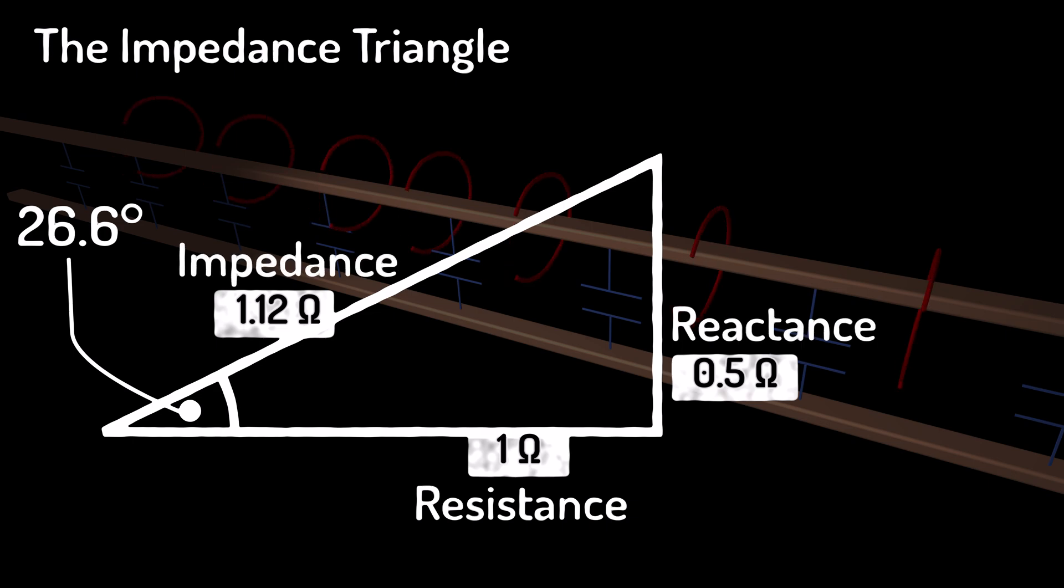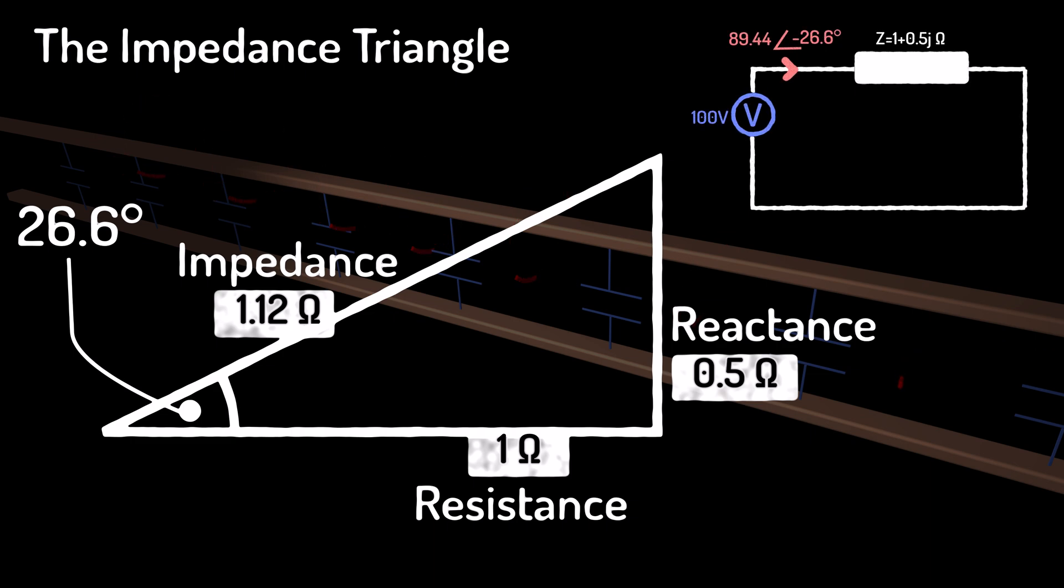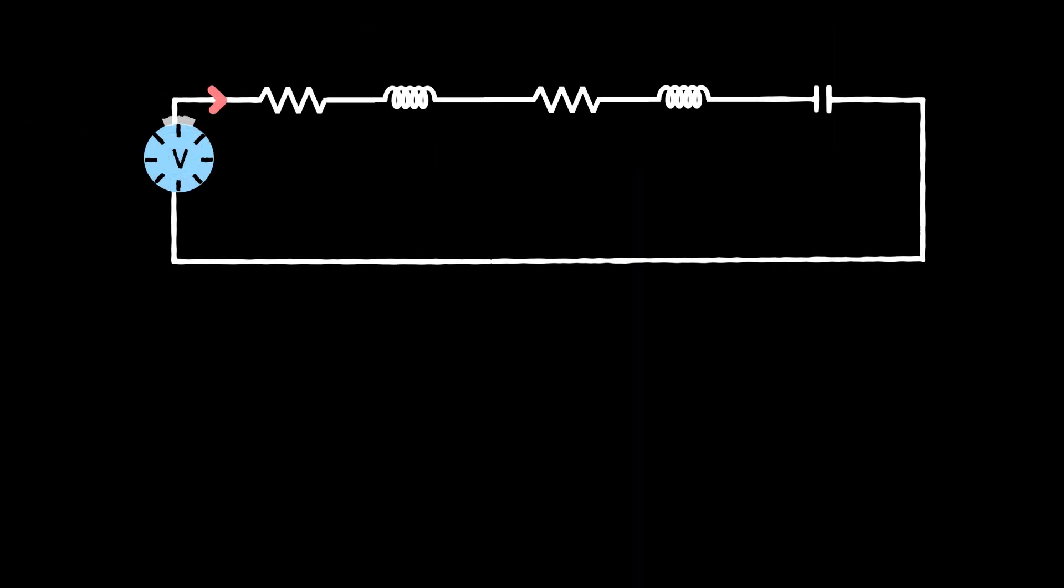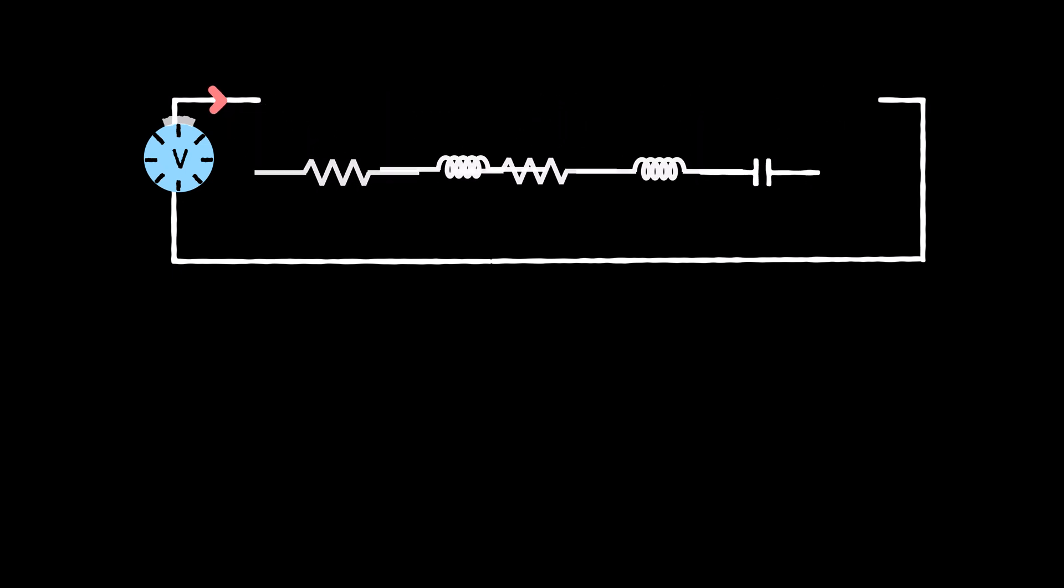Of course, in a real system, there will be many of these elements, each with a mix of resistance, inductance and capacitance. But what we show here is how you can combine these components into one single part. And this fully models the relationship between voltage and current in an AC system.